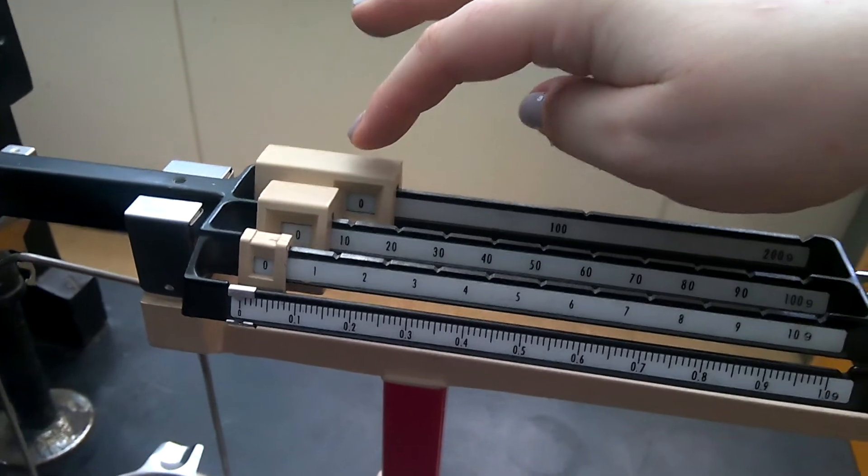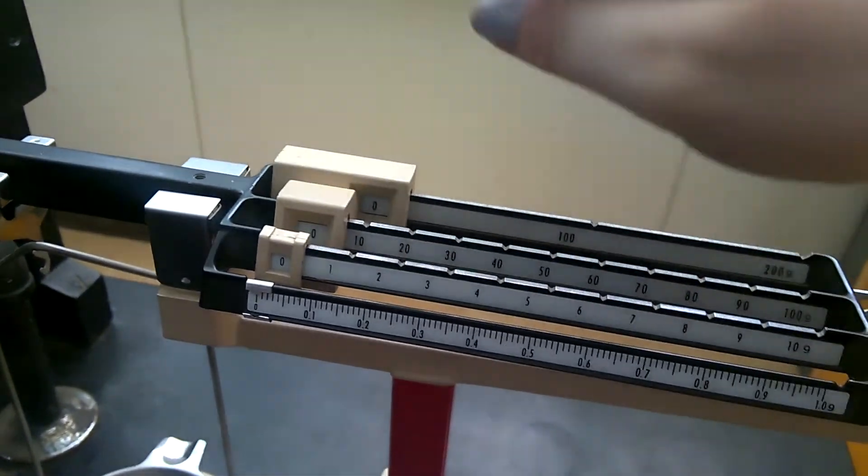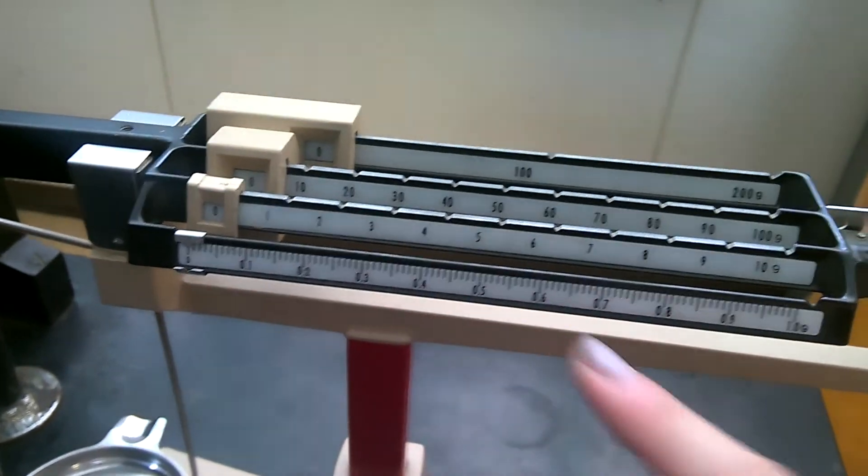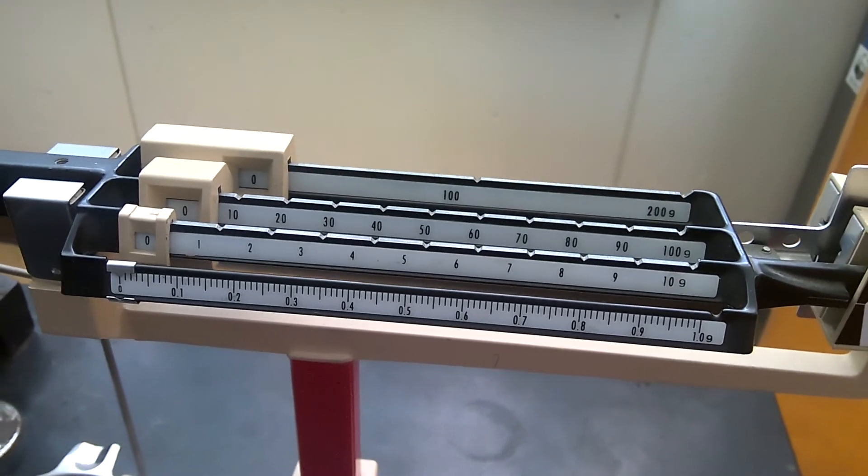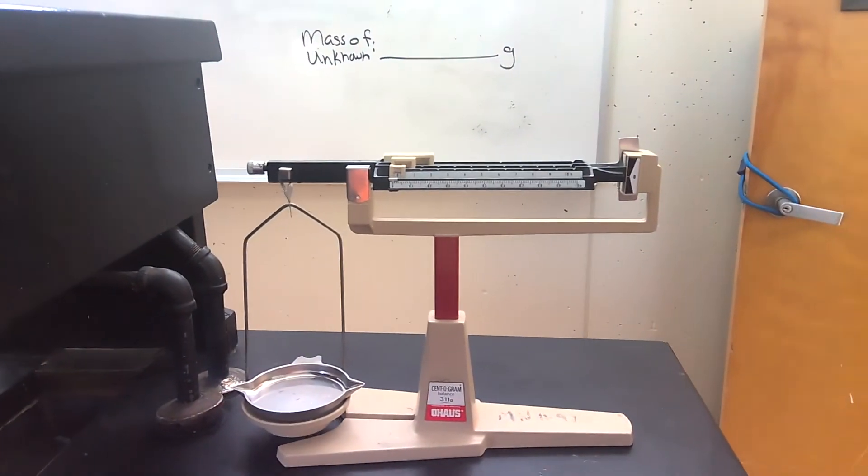So the back one is the hundreds, then the tens, and then the ones. And then you get to the numbers that are going to be past the decimal and we use those numbers to get precise measurements of objects, substances, and chemicals in chemistry.